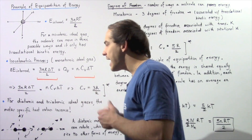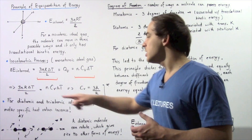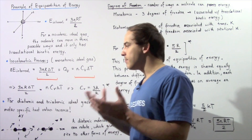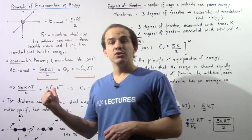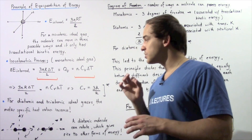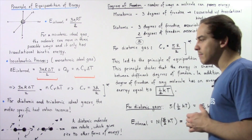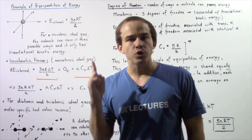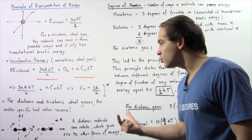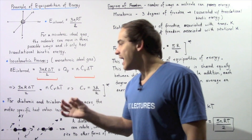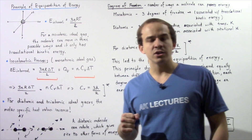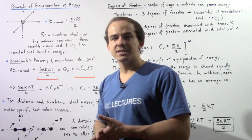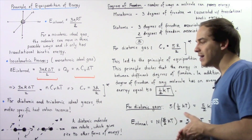Now let's move on to more complex ideal gas molecules — diatomic and triatomic molecules. Diatomic means the molecule is composed of two atoms; triatomic means it is composed of three atoms. For diatomic and triatomic ideal gases, the molar specific heat value increases because these molecules can move in more ways than a monatomic molecule.